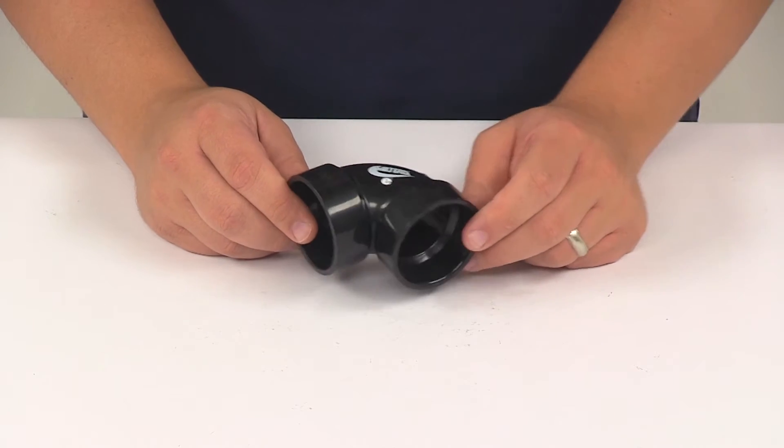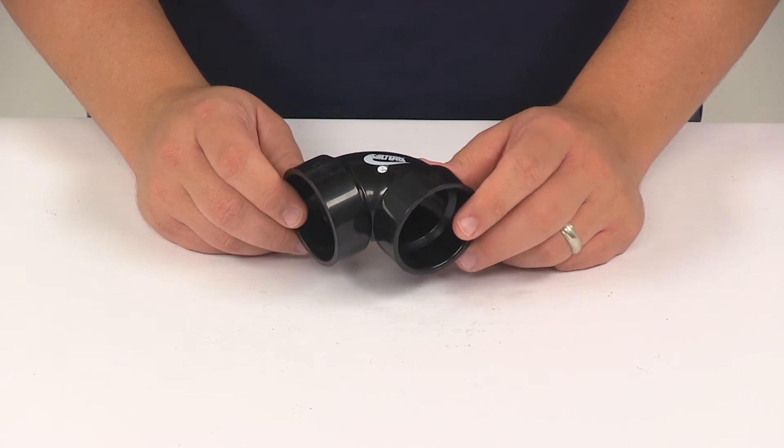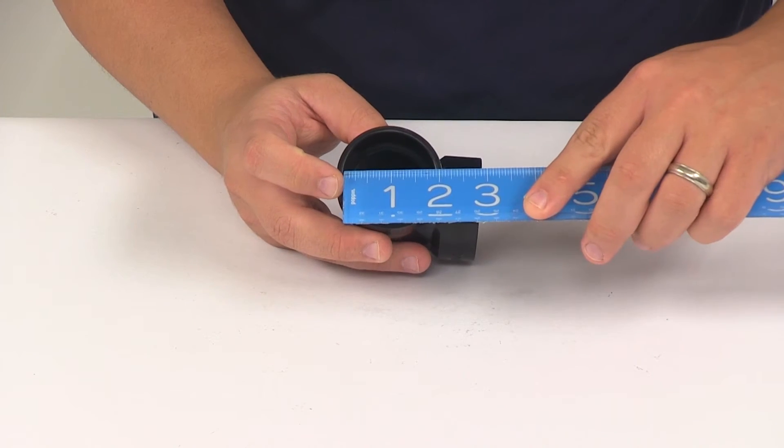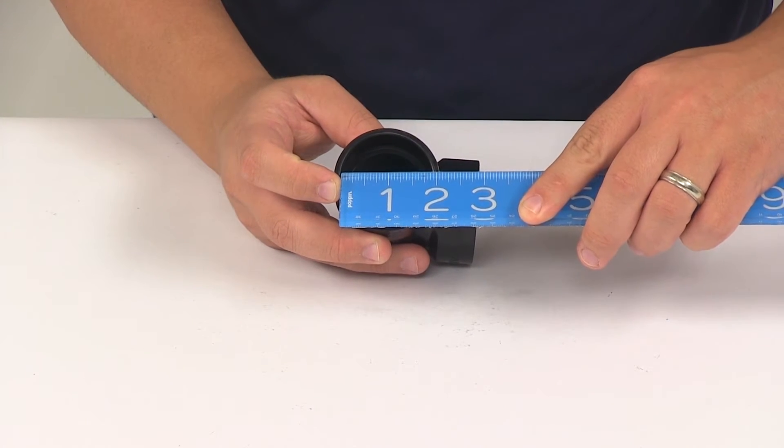DWV stands for drain waste and ventilation. It features the inch and a half hub located on each side. Those give us an inner diameter of right around 1 and 7 eighths of an inch.